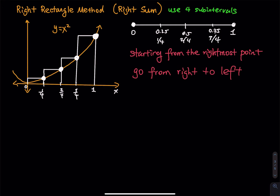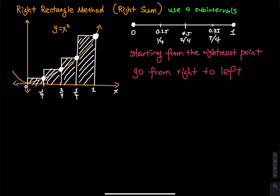So here we have four rectangles: this is the first one, this is the second one, this is the third one, and this is the fourth one. Since we are using the right sum, I will use the notation R4. The R stands for right and the 4 stands for 4 subintervals.